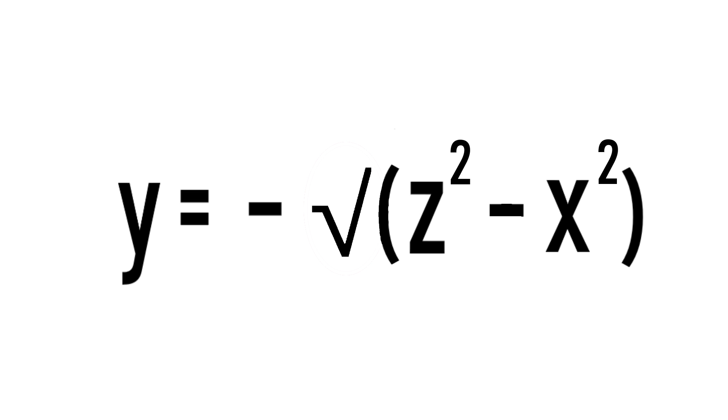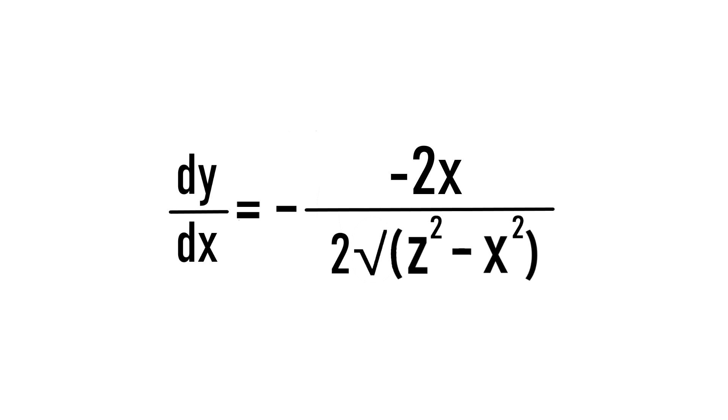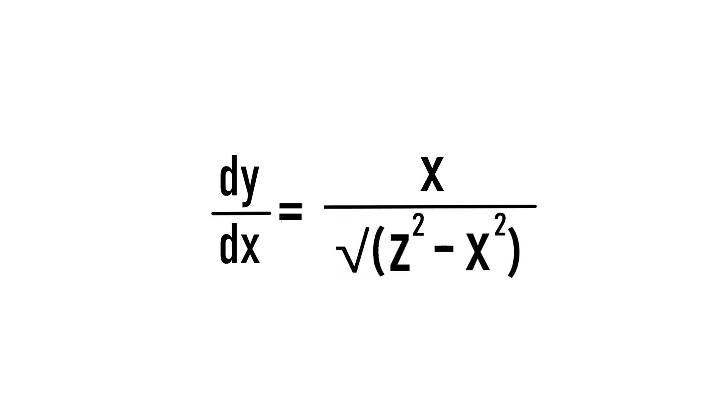Alright, now that we have the equation in terms of y, I'll take the derivative of it. It's a pretty simple chain rule application, so I'll show a quick play-by-play of what I'm doing here. Okay, now that we know the derivative of the equation of our circle, we know the slope at any point on the circle.